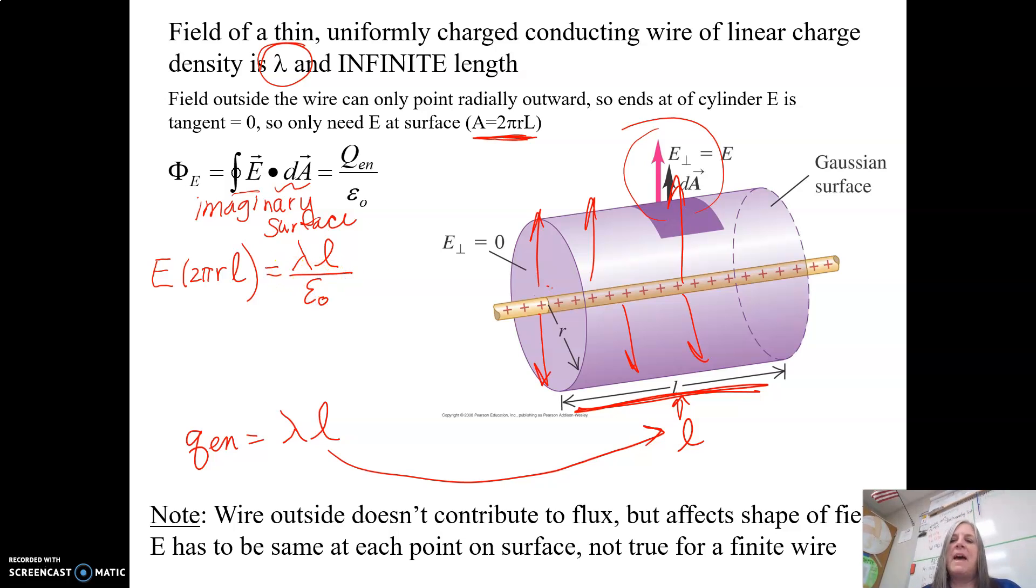Hmm, that's interesting. Look at this. The L's cancel. And so the electric field for an infinite line of charge of a linear charge density lambda is lambda over 2 pi epsilon naught r.